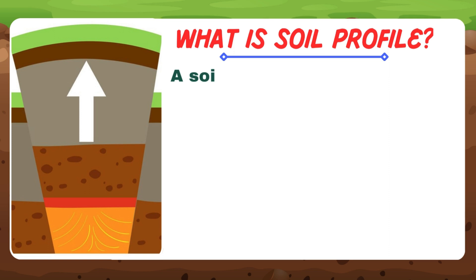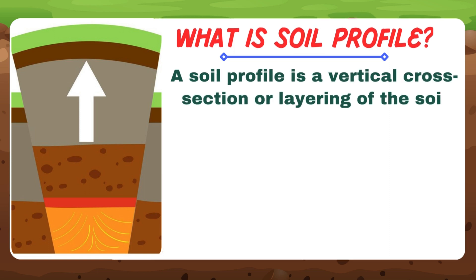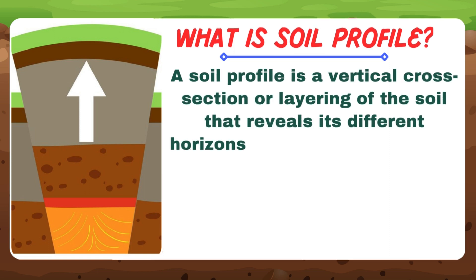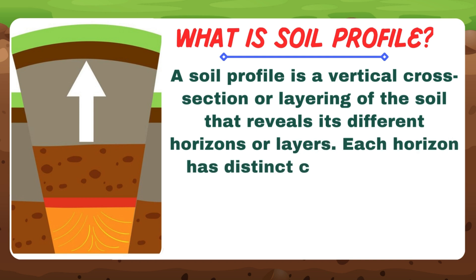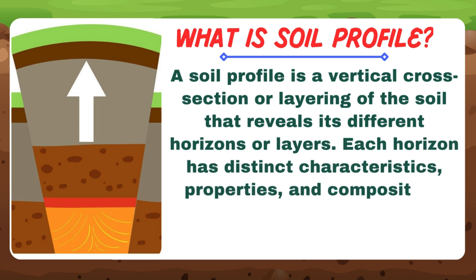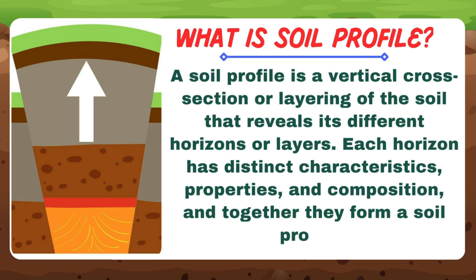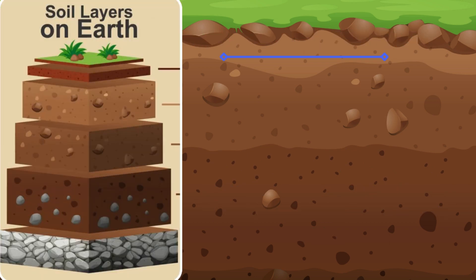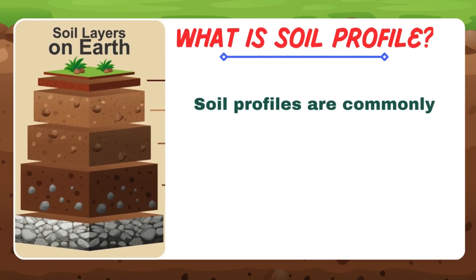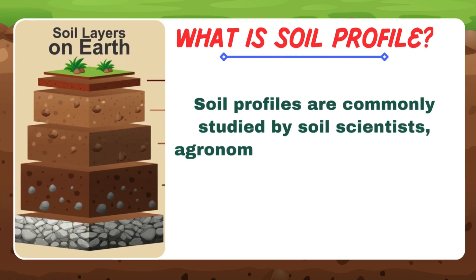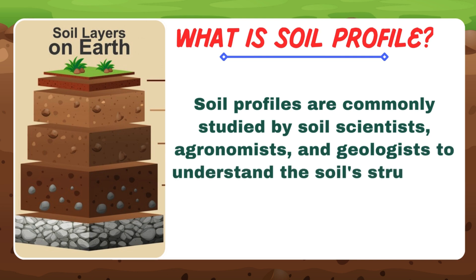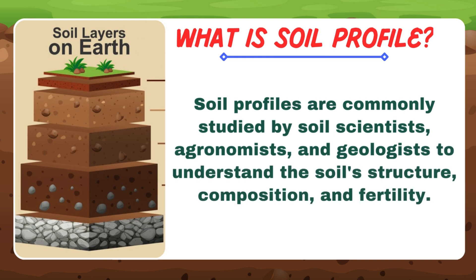A soil profile is a vertical cross-section or layering of the soil that reveals its different horizons or layers. Each horizon has distinct characteristics, properties, and composition, and together they form a soil profile. Soil profiles are commonly studied by soil scientists, agronomists, and geologists to understand the soil structure, composition, and fertility.